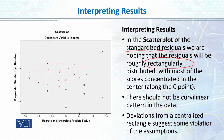If there is a deviation or a curvilinear pattern, that means there is a problem in our data. Deviation from the centralized rectangle suggests some violation of the assumption. So if we see a curvilinear pattern, or more piling of scores in one area and fewer in another, that means there is a problem in the data. What you want to see in this standardized residual plot is a rectangular kind of distribution.